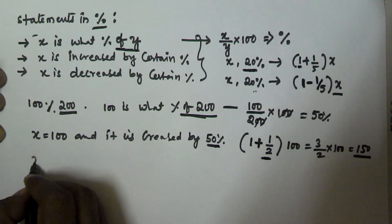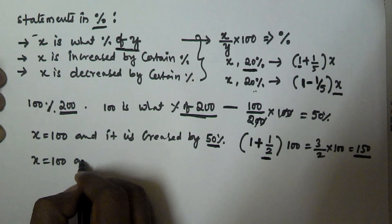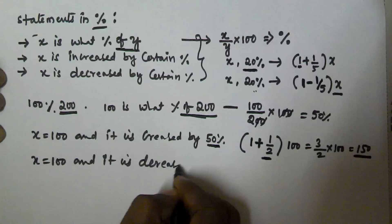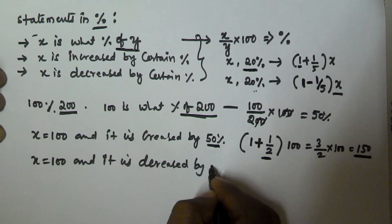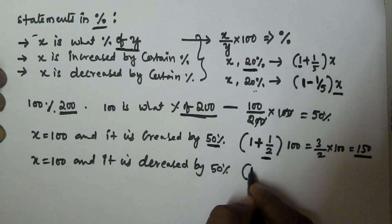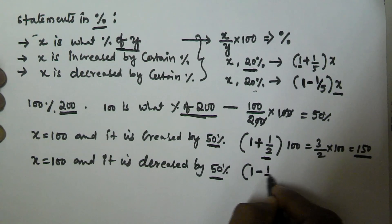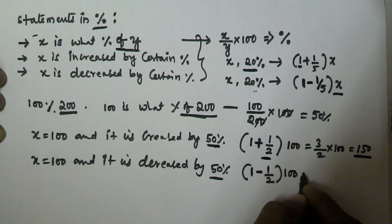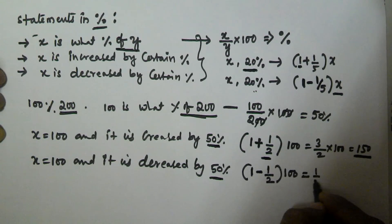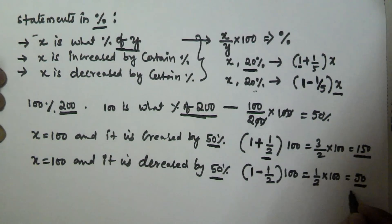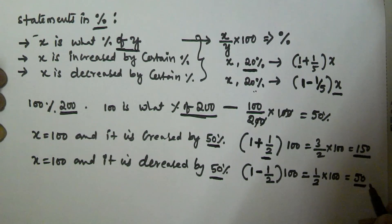For example, the value of x is 100 and it is decreased by 50%. The initial 100% value is already there, and we decrease by 50%. The fraction equivalent to 50% is 1/2. So the new value is (1 − 1/2) × 100 = 1/2 × 100 = 50.